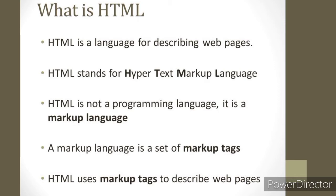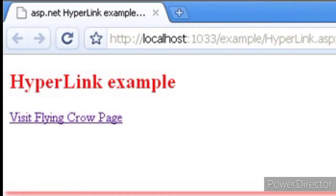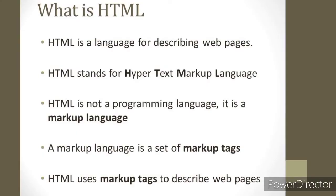Hypertext means we are creating a text which is linked to different pages. Like if I have made a text link, when you click on that text, different pages will be opened — this is called hypertext. And markup means we are marking up a text document with tags that tell the browser what to display. So we can use HTML to create different web pages.